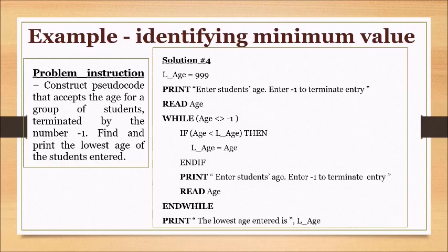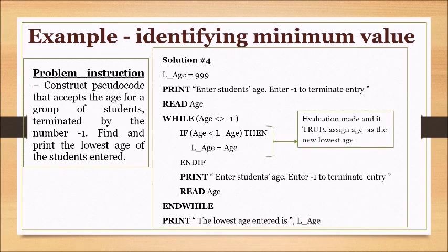The while loop header contains the while keyword and the condition age not equal to negative one, which acts as the point used to determine whether the loop is terminated. A selection statement is then used to evaluate whether age is less than the variable containing the lowest age. If this condition is true, the variable l_age is updated to store the current student age. The inner prompt and input statement accepts a new entry for student age, which is then evaluated to determine whether the loop continues or is terminated. Once negative one is entered, the keyword end-while indicates the termination point. The solution ends by displaying the lowest age entered.